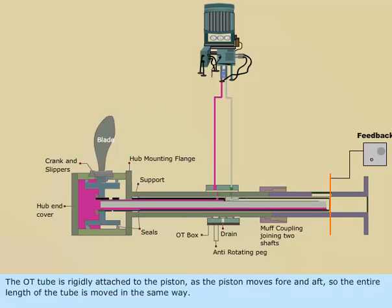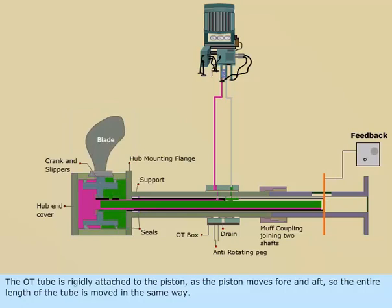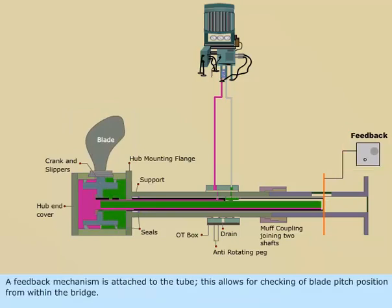The OT tube is rigidly attached to the piston, as the piston moves fore and aft, so the entire length of the tube is moved in the same way. A feedback mechanism is attached to the tube. This allows for checking of blade pitch position from within the bridge.